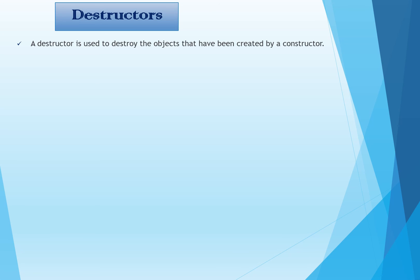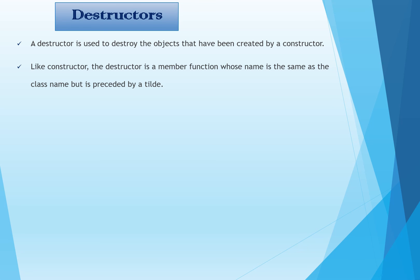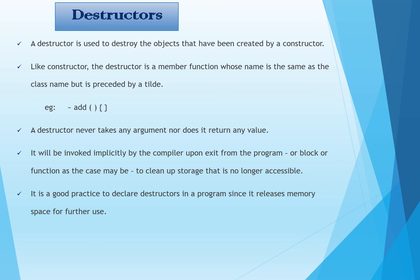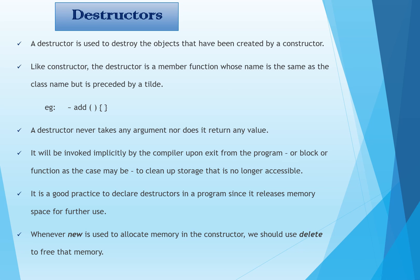A destructor is used to destroy the objects that have been created by a constructor. Like a constructor, the destructor is a member function whose name is the same as that of the class name, but it is preceded by a tilde (~) sign. A destructor never takes any argument nor does it return any value. It is invoked implicitly by the compiler upon exit from the program, block, or function to clean up storage that is no longer accessible. It is good practice to declare destructors in a program since it releases memory space for further use. Whenever new is used to allocate memory in the constructor, delete should be used to free that memory.